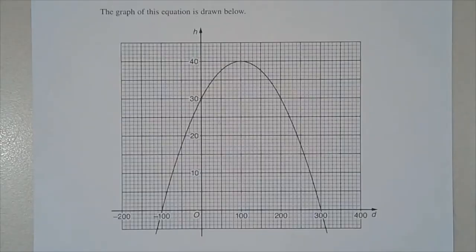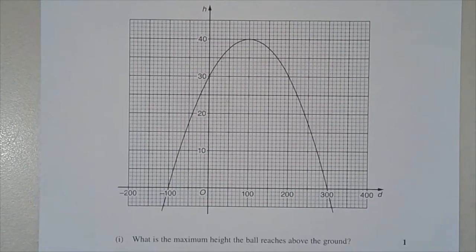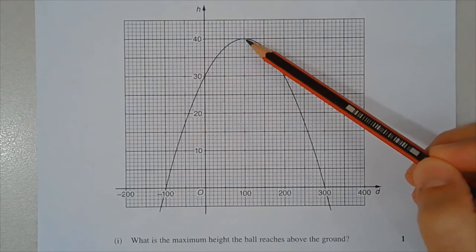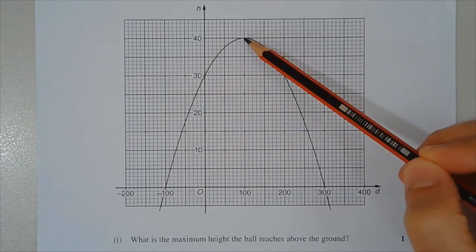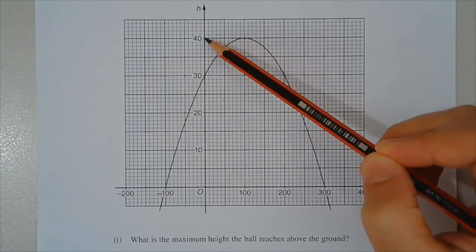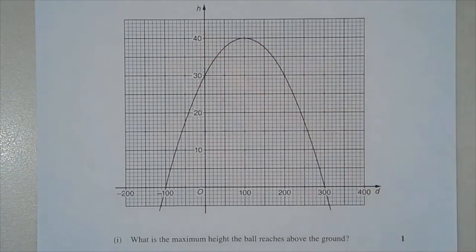The graph of this equation is drawn below. Part one: what is the maximum height the ball reaches above the ground? The vertex of the parabola represents the maximum height. Locate the vertex, project across to the y-axis, and we can see that the maximum height of the ball above the ground is 40 metres.